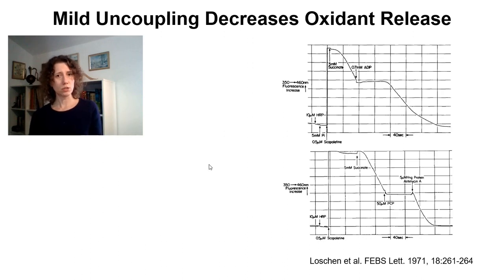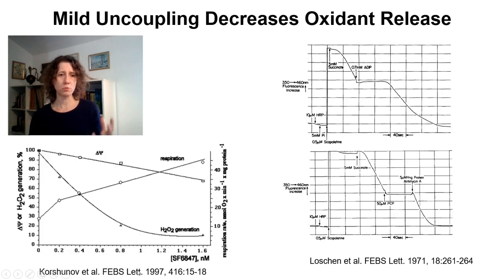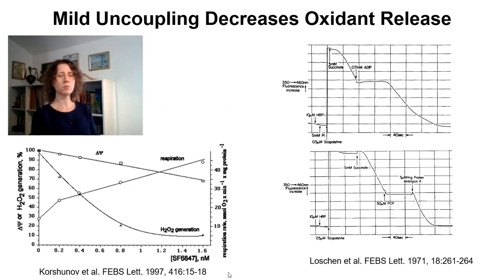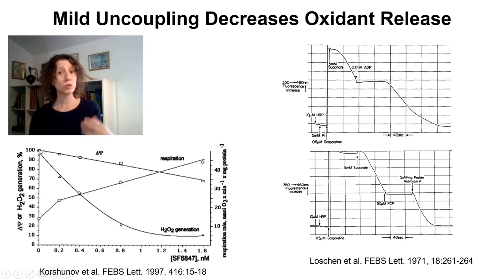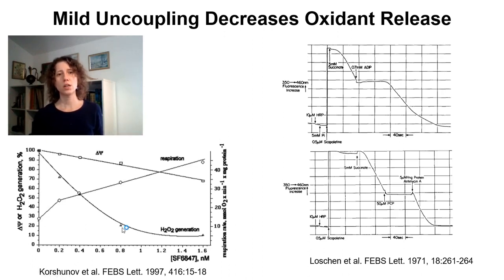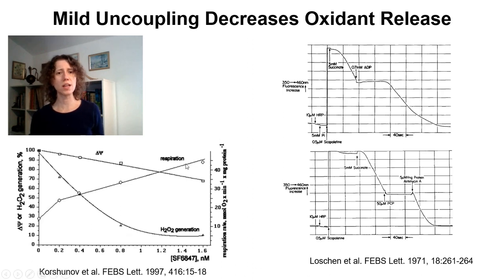The idea that uncoupling mitochondria has a regulatory effect on mitochondrial oxidant production was cemented by Starkov's group in 1997, where they showed that the amount of uncoupling needed to regulate mitochondrial hydrogen peroxide release is quite small. They titrated very small amounts of uncoupler and decreased membrane potential by at most 20%. This small decrease in membrane potential — which does not impede oxidative phosphorylation — can actually decrease hydrogen peroxide generation substantially. So mild mitochondrial uncoupling is very effective in preventing oxidant production, and that's why this paper became highly cited.